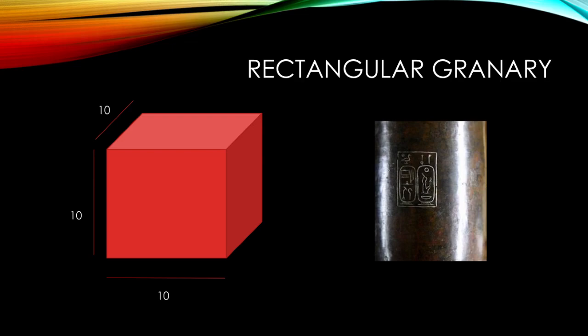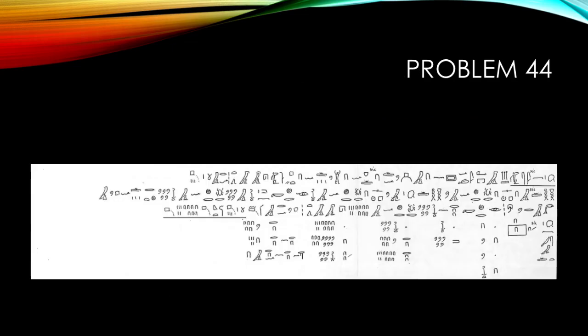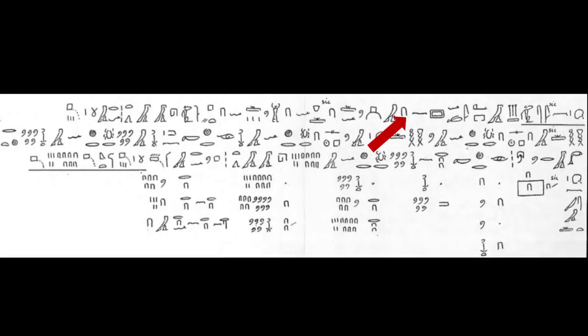Now let's go to the papyrus and see how they solved it. Example of reckoning the volume of rectangular granary. The length is 10, the width 10, and the height is 10. What is the amount of grain that goes into it?